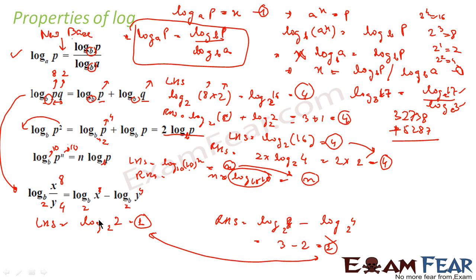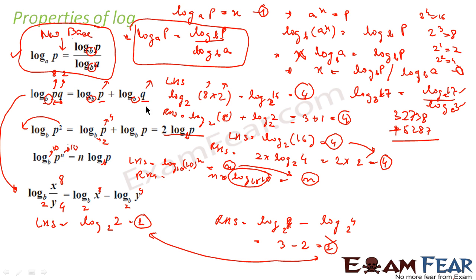So the summary of all properties: if you want to change the base, log p to the base a becomes log p divided by log a with a new base. If you have a product pq, then log pq equals log p plus log q. If it is p to the power n, this becomes n log p. If it is x divided by y, this equals log x minus log y.